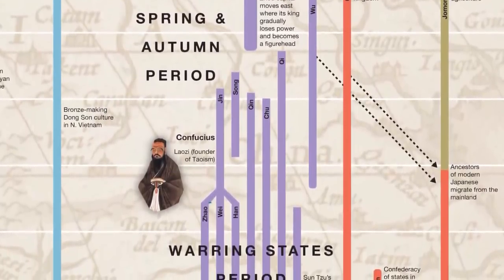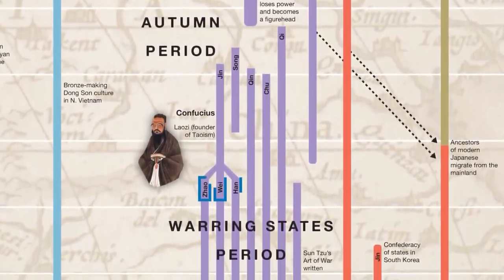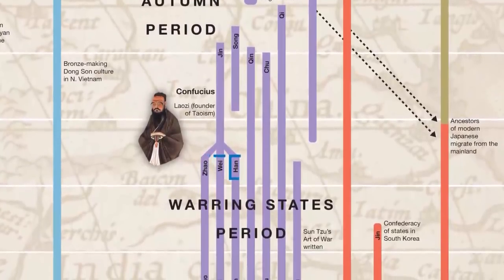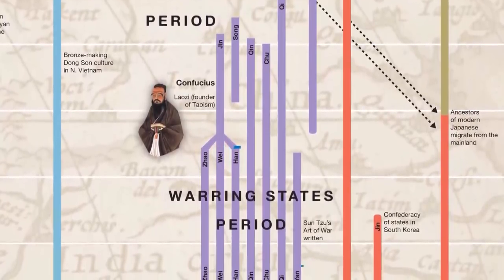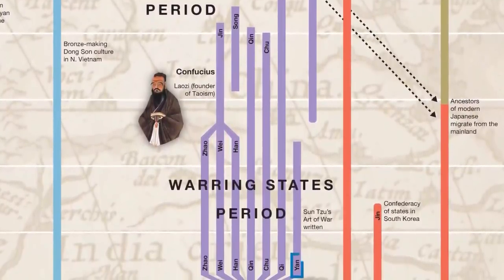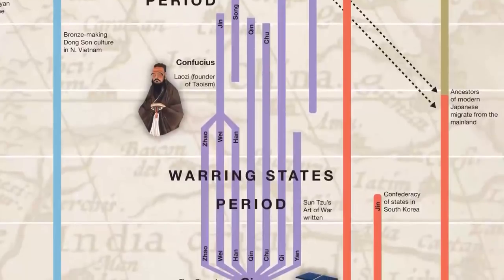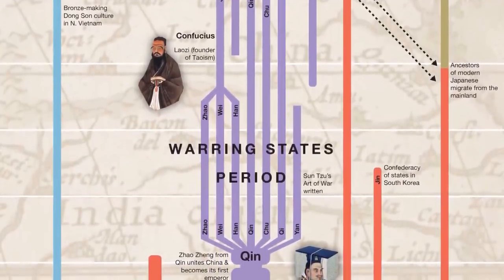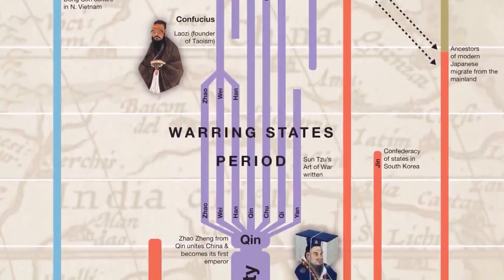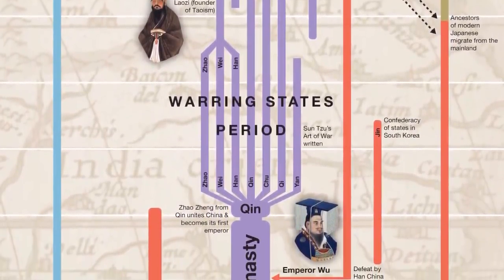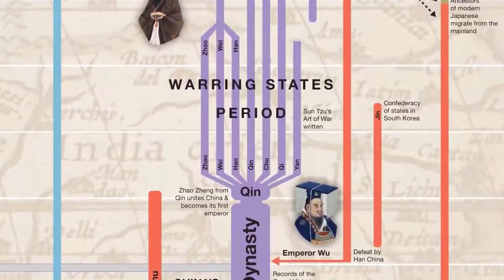By this point, Jin had split into Zhao, Wei, and Han, and together with Qin, Chu, Qi, and Yan, there were now seven major states fighting for supremacy. It was during this period that Sun Tzu wrote his famous book The Art of War. Eventually one state was able to win out and unify all of China. This was Qin, which might be where the word China comes from.